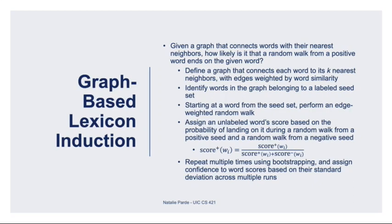Graph-based lexicon induction works by inducing how confidently a random walk from a known positive instance will end on a given word. You start by defining a connected graph where each word is connected to its k-nearest neighbors, with edges weighted according to the similarity between words. You identify words from the labeled seed set, and for a given seed word, you perform a random walk on the graph with the likelihood of moving from one node to another being proportional to its edge weight. A word's polarity score for a given seed set is then the probability that a walk from a member of that set will end on it. A word's overall polarity score is based on both the scores for the positive and negative seed set, as shown here. Finally, you repeat this process multiple times with different seed sets using bootstrapping, and assign confidences towards scores based on their standard deviations across these multiple runs.